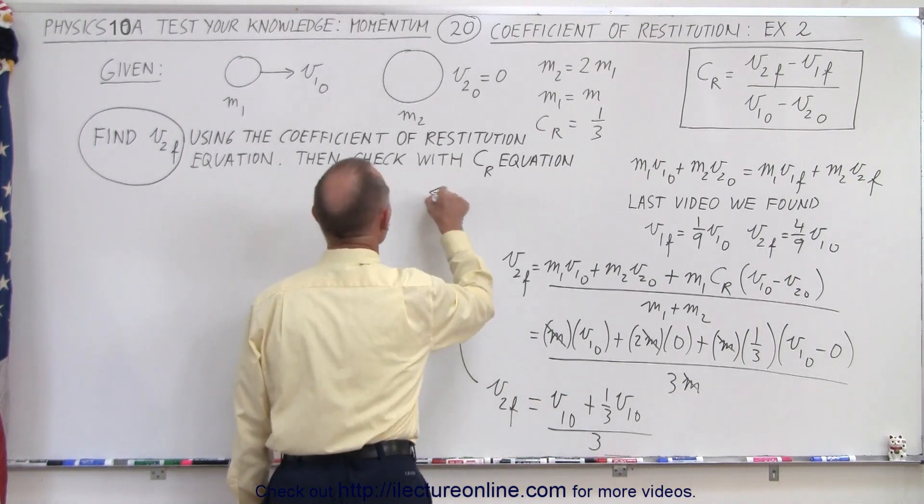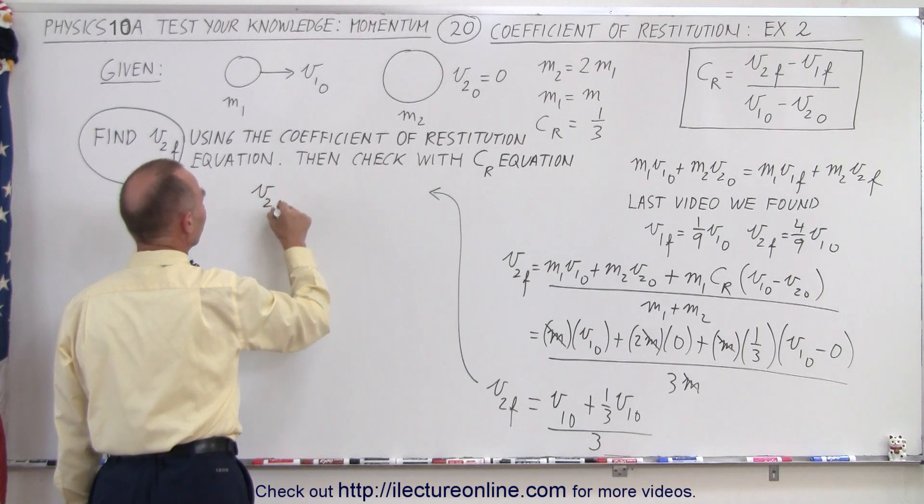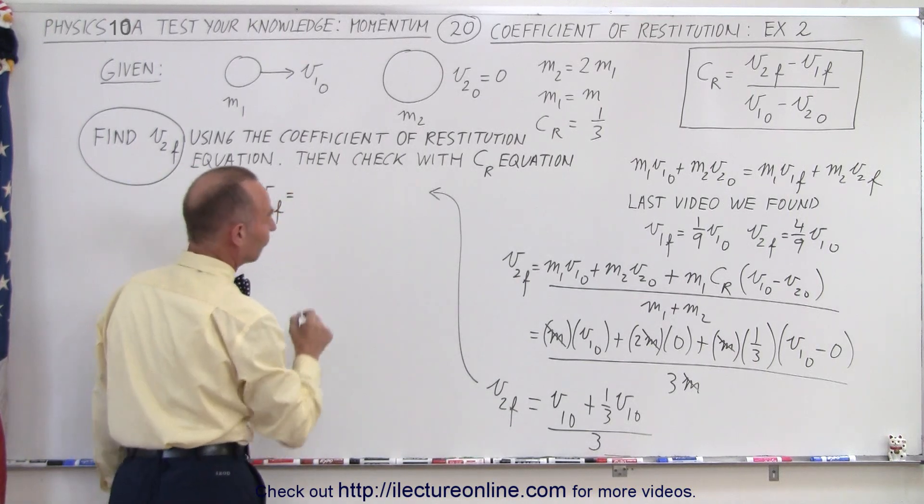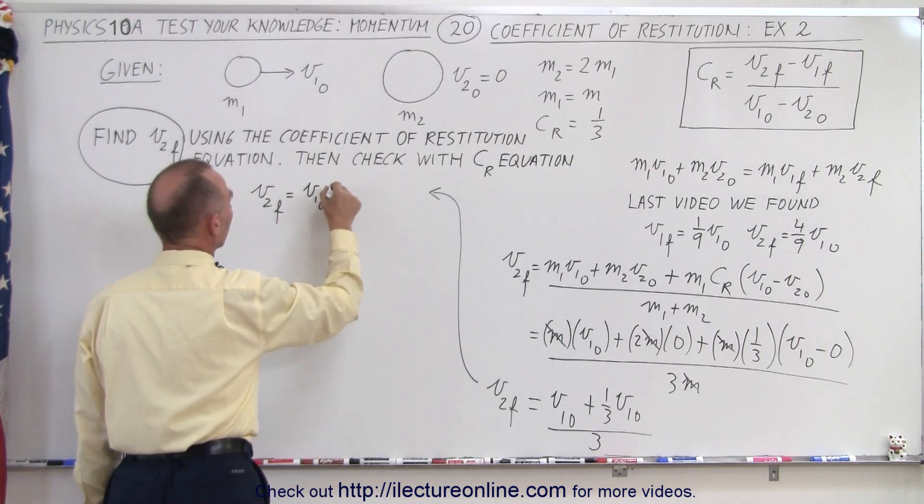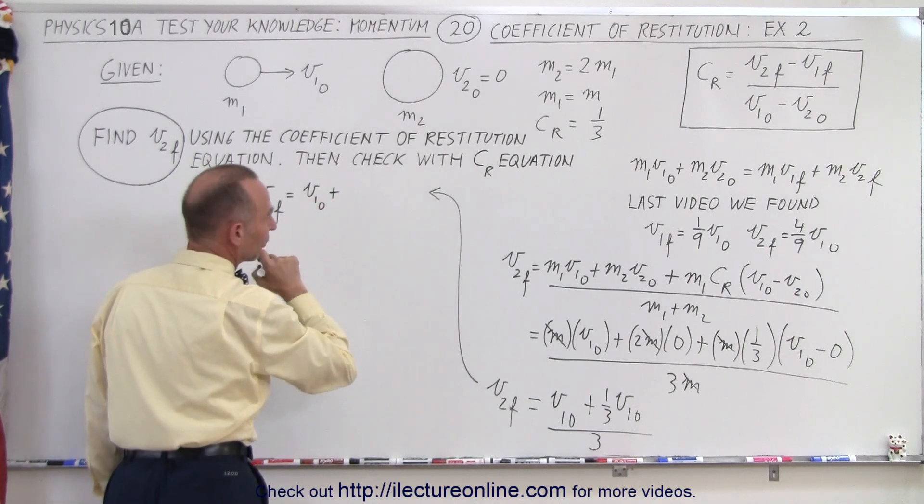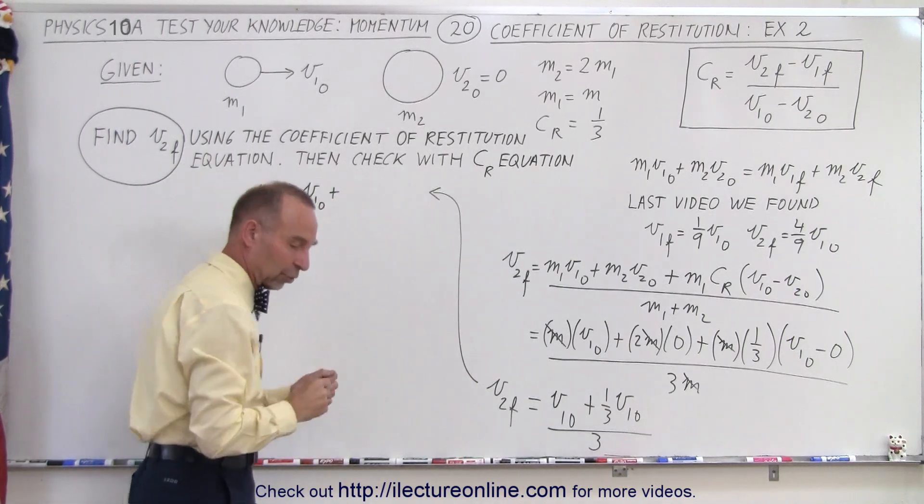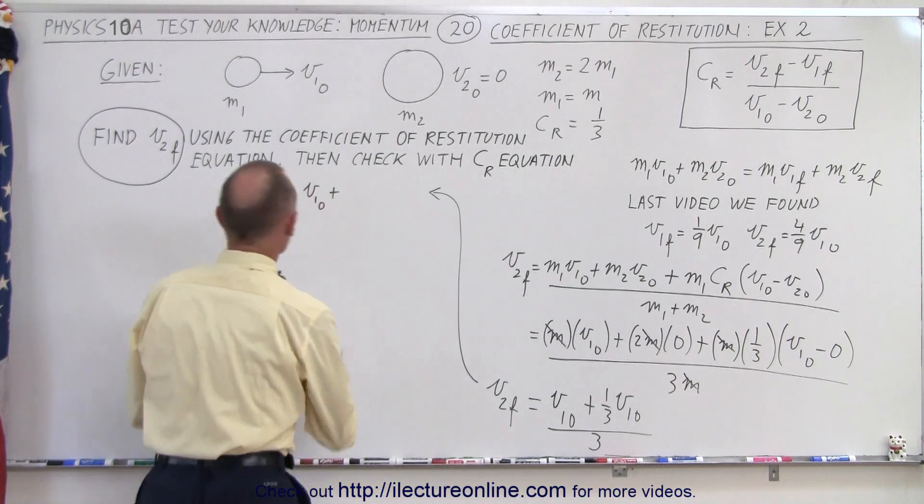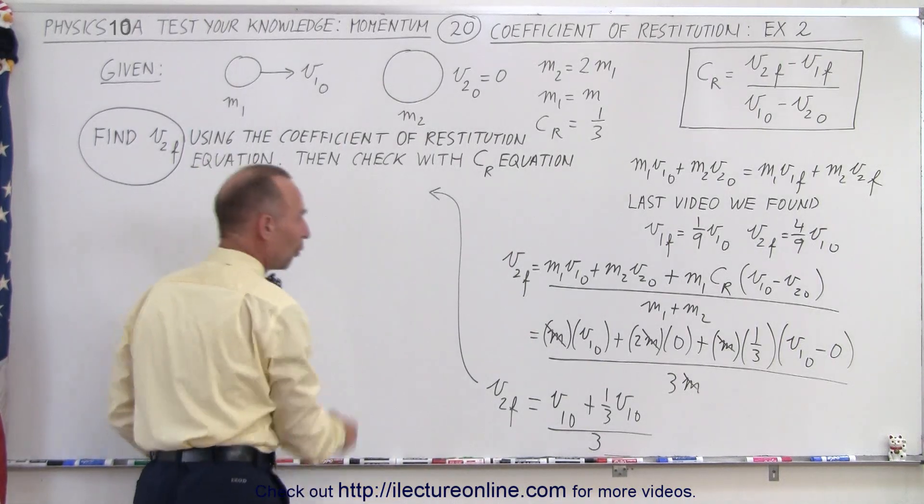Let's come up here and finish that up. v2 final is equal to v1 initial plus one-third v1 initial. Let's go ahead and add those two up. So 1 plus one-third, that would be four-thirds.